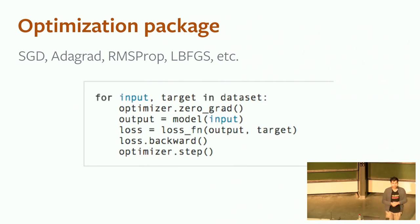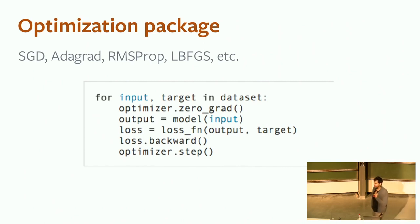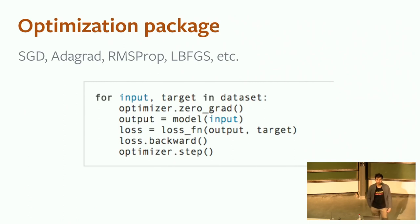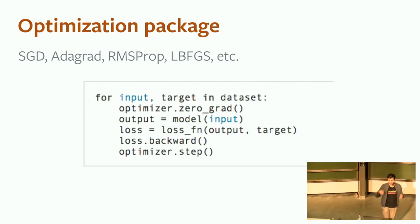Question: is the optimization itself implemented in terms of torch operations, so can you do meta-optimization? Yes — you can create an optimizer that is itself some kind of parameterized model that provides the gradient descent step and is learning how to optimize. You could do all kinds of inception-style ideas.